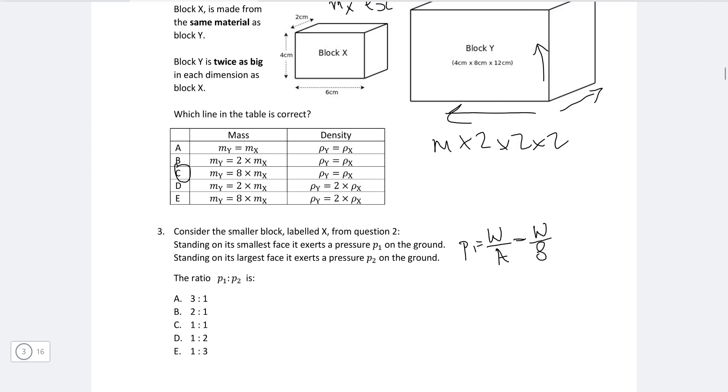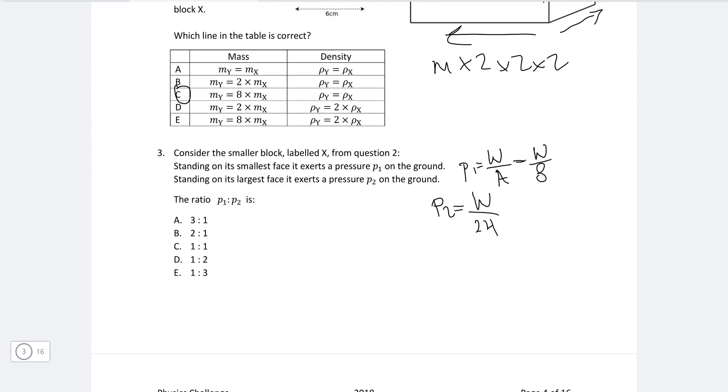So we can just write this down as the pressure is the weight over eight centimeters squared. Now P2, on the other hand, will be the same weight, but now the largest face is going to be four by six. So that's going to be 24, like so.